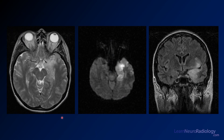On the MRI, the medial temporal lobe shows a lot of T2 hyperintense swelling — much more obvious on T2 compared to the CT. On diffusion, it's very bright, involving the amygdala, hippocampus, and medial temporal lobe, with maybe a little extension up into the insula. On the coronal FLAIR, we see swelling and loss of gray-white differentiation.